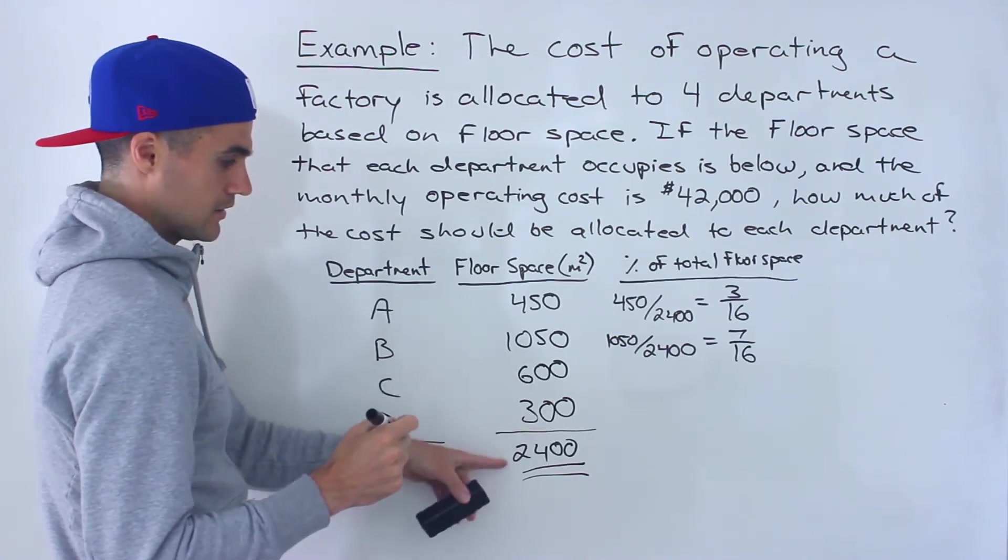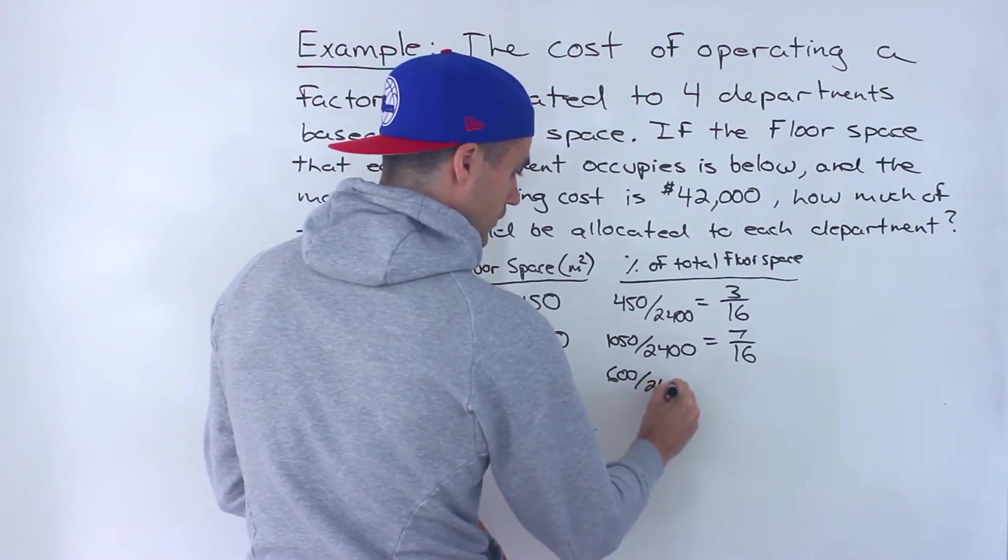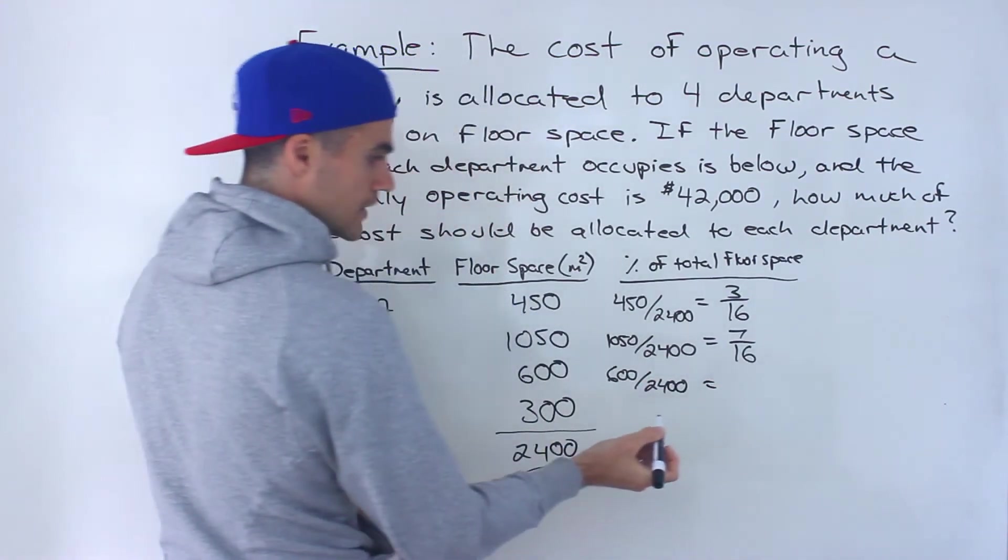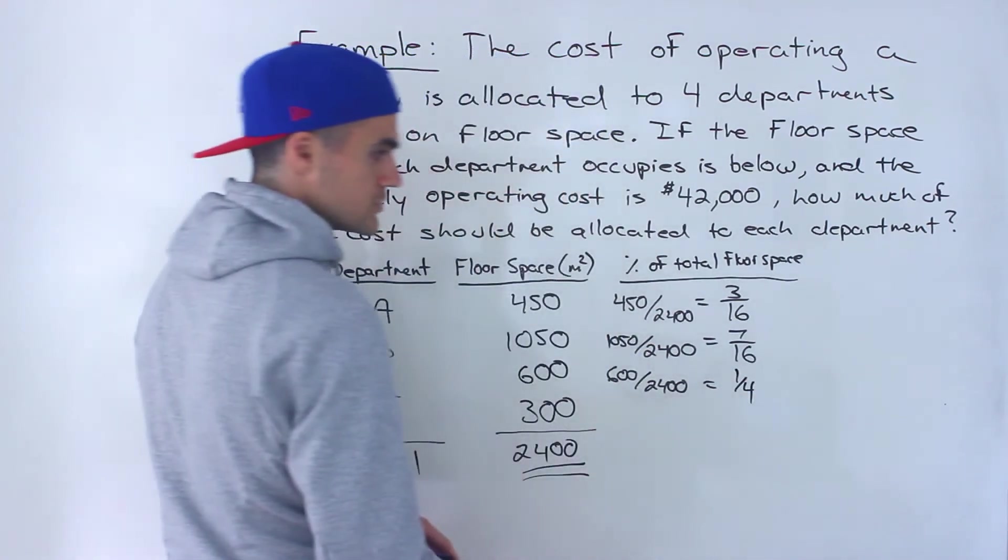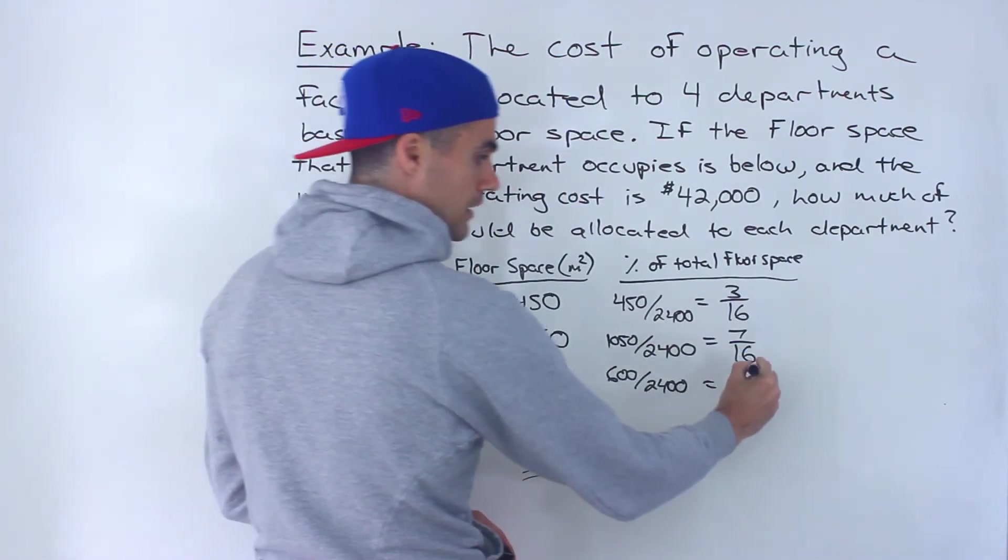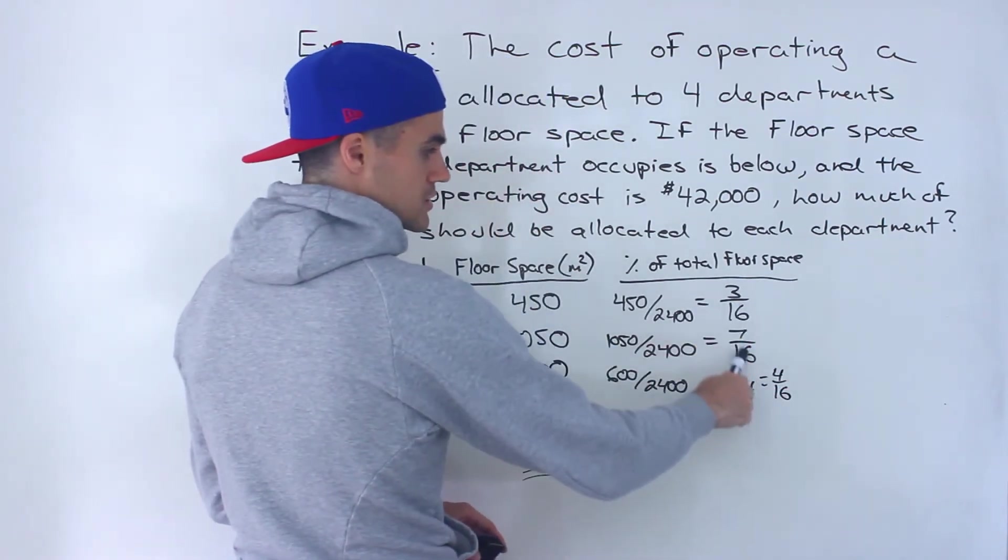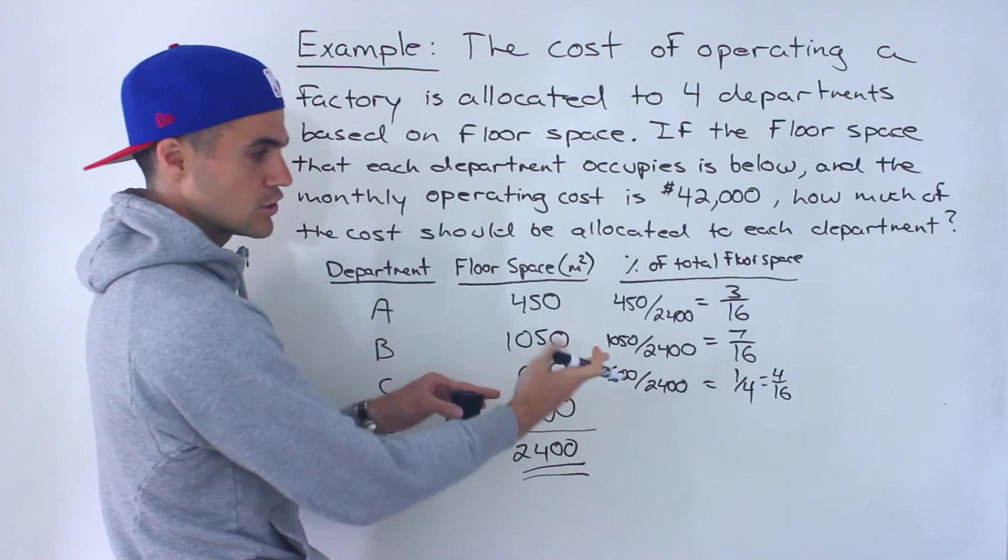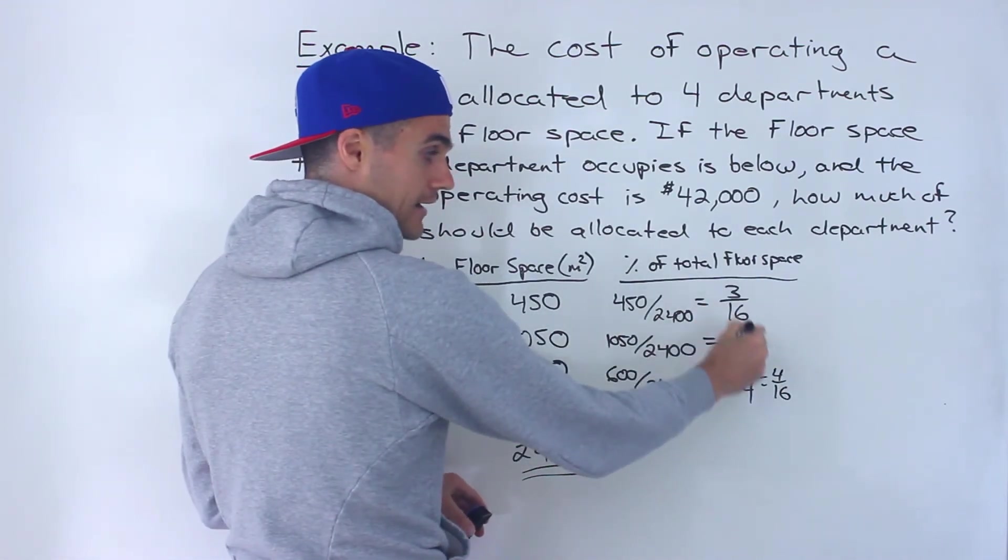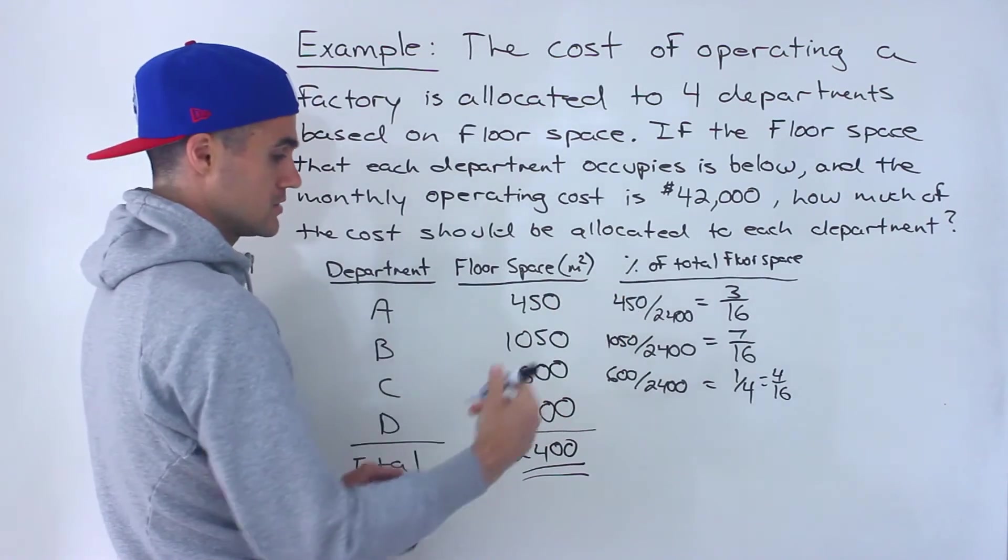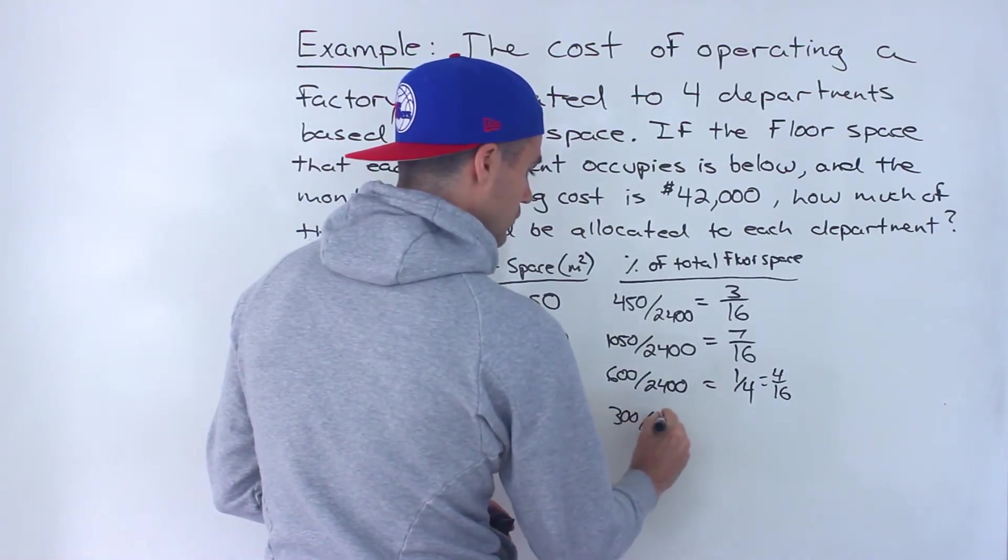And then 600 over 2,400, that would be 1 over 4 or 0.25. If you want to keep it as the same denominator, this could also be 4 over 16. A lot of times it's good to keep it as the same denominator because then you could check your answer or check these answers by adding them all up and they should all add up to 1.